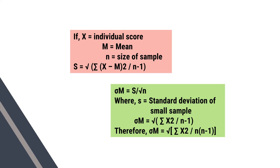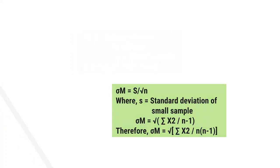Therefore, the standard deviation of the sample mean is equal to the square root of the sum of squared scores divided by n times n minus 1.